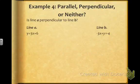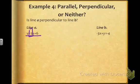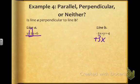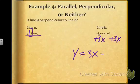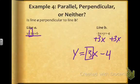This time we are given one equation already in slope intercept form with slope 3, and the other in standard form. Adding 3x to both sides gives y equals 3x minus 4, and now I can see it also has a slope of 3. Since they have the same slope, these two lines are parallel.